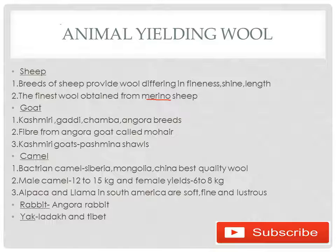There are different goat breeds such as Kashmiri, Katti, Chamba, and Angora. The fiber obtained from the Angora goat is called mohair. The famous Kashmiri shawls, called Pashmina shawls, are obtained from Kashmiri goats. The Bactrian camel from Siberia, Mongolia, and China yields the best quality wool — a male camel yields 12 to 15 kg of wool.